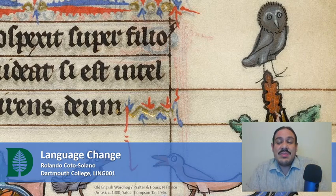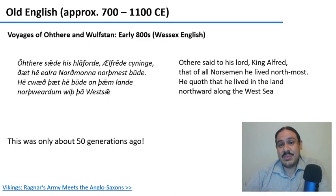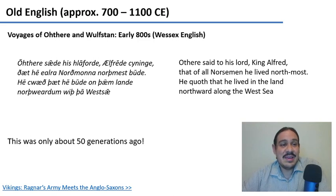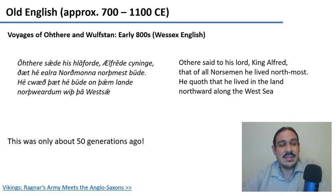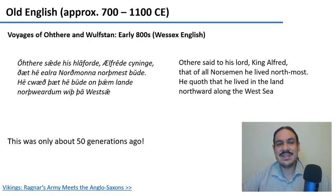Let's imagine we travel back in time about a thousand years, which is about fifty generations. If we were in England, this is the English that we would find there. Take a moment and try to find which words in the Old English you can recognize that are similar to the way we speak English. Please pause the video.